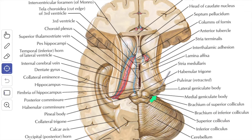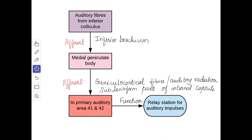The medial geniculate body is an oval elevation on the inferior aspect of the pulvinar of the thalamus, lateral to the superior colliculus. It is more prominent than the lateral geniculate body. The inferior brachium runs upward, laterally, and forward from the inferior colliculus to the medial geniculate body.